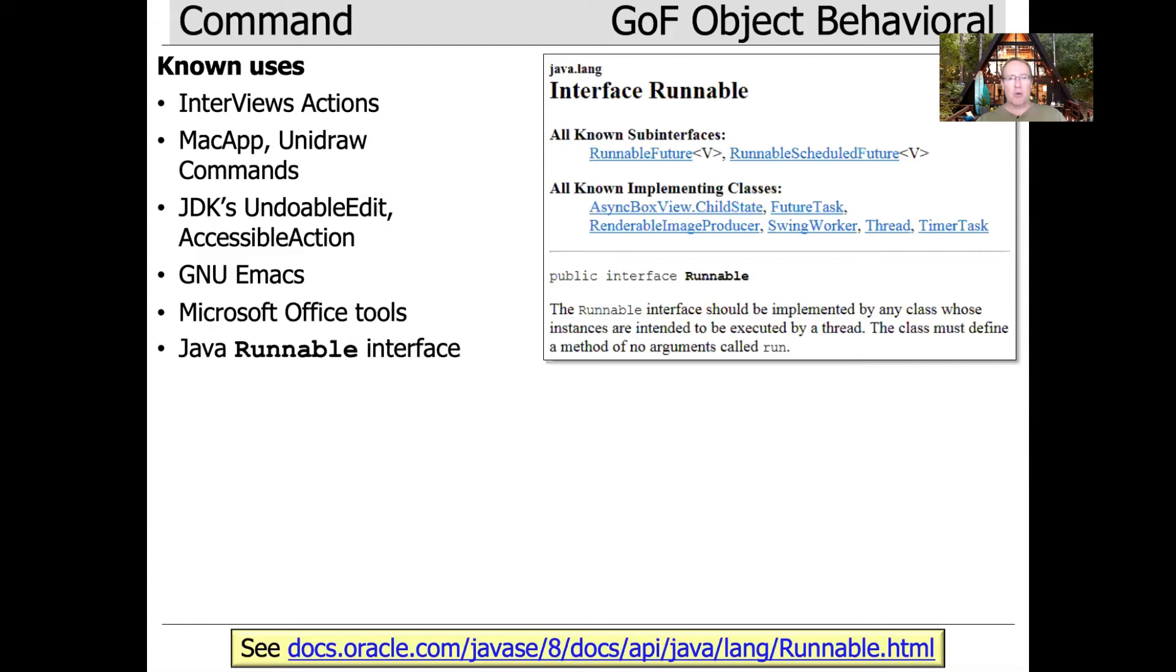If you're familiar with Runnable, it's a very simple interface. It has a single method called run that takes no parameters and returns no result, so it's a clear example of a command. It's also an example of a functional interface in Java. You can implement a runnable and define its run hook method to do various things as a command.